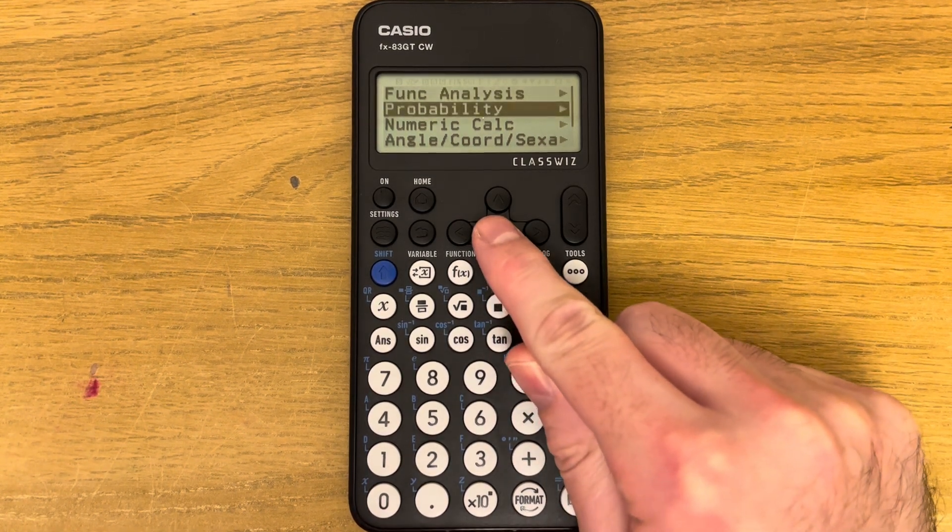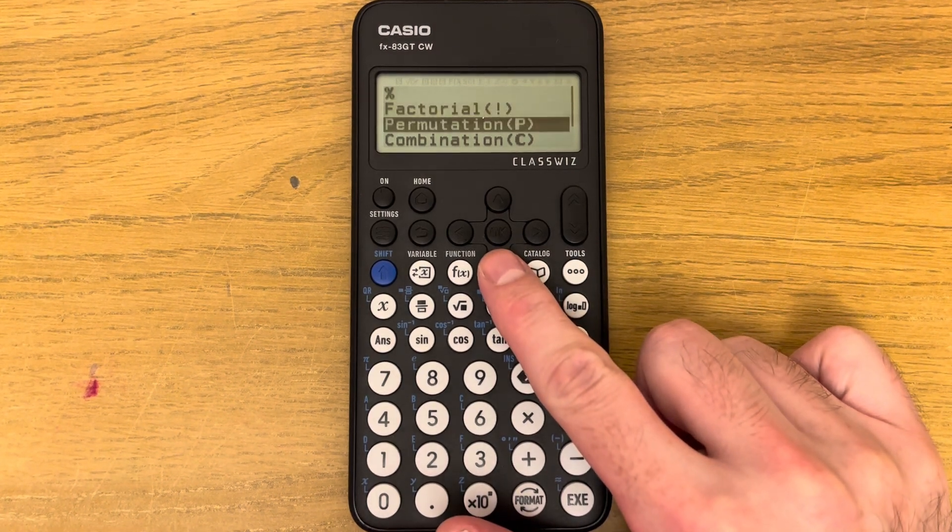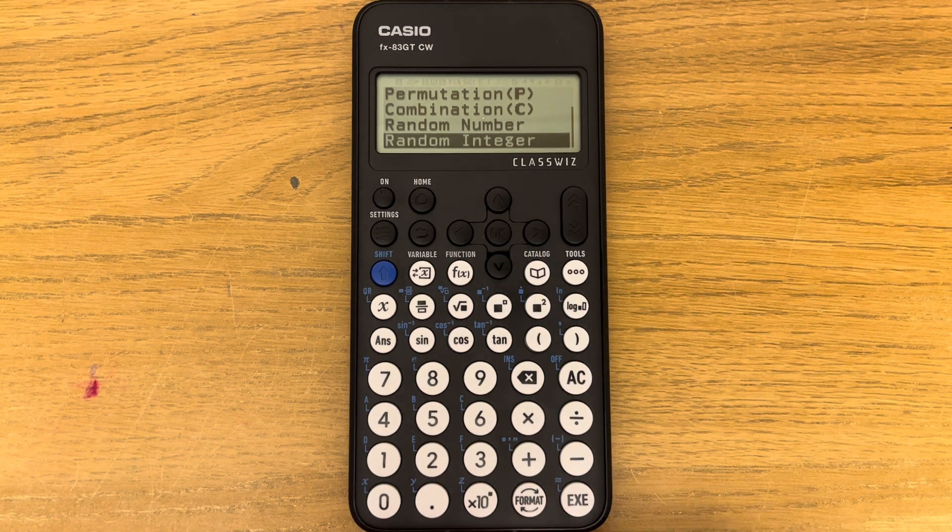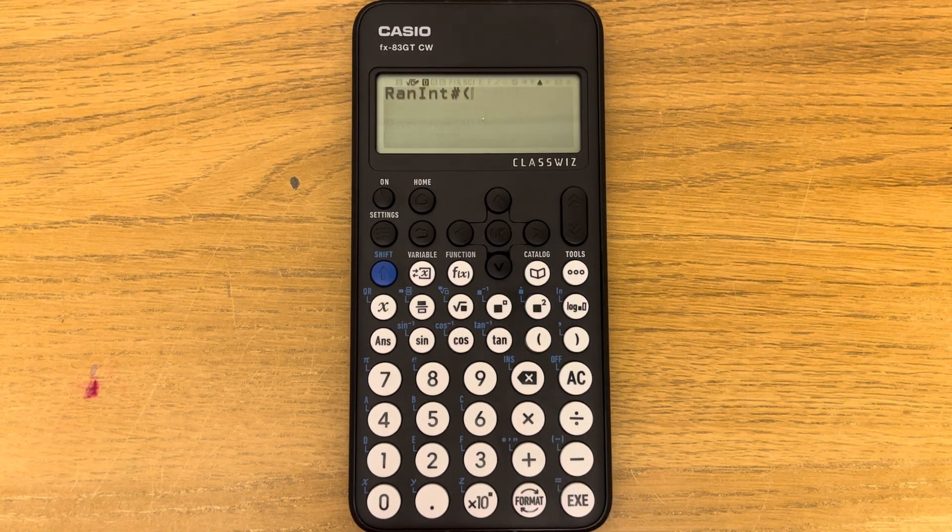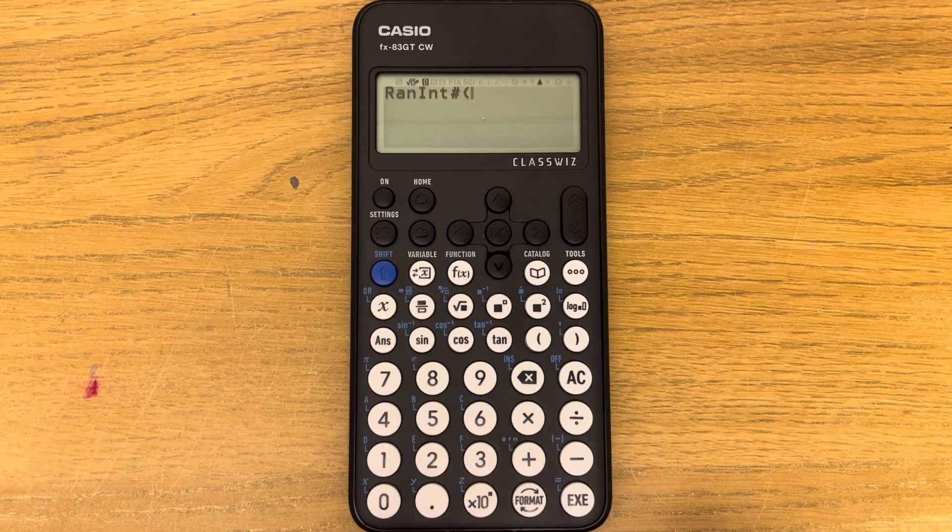Probability, press OK, and then scroll down again until you see Random Integer. Press Execute. Then you need to set the range which you want your